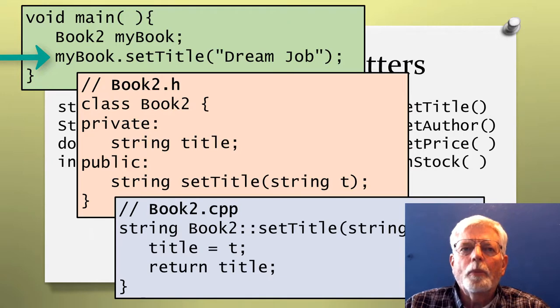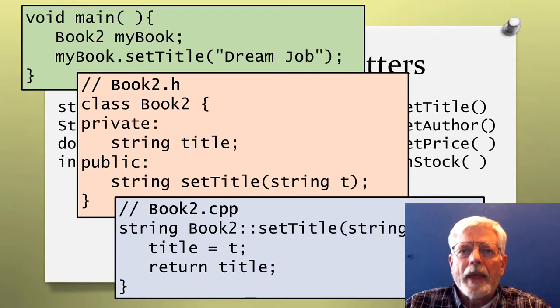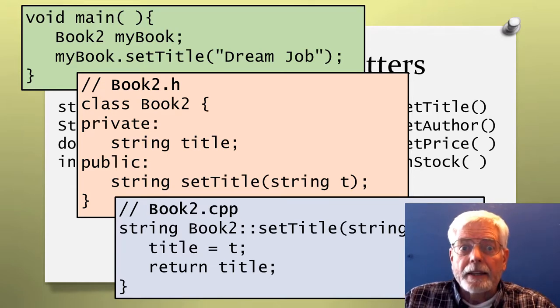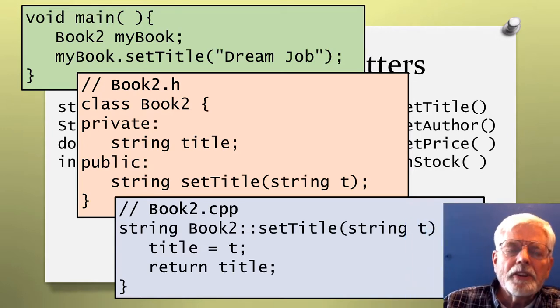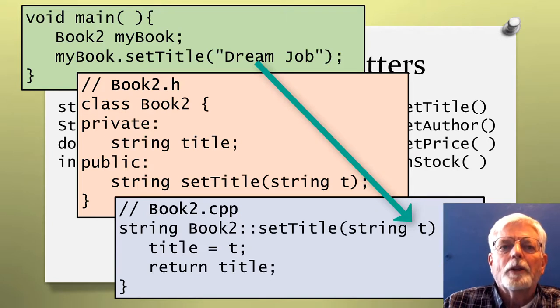In these code segments, main is instantiating a Book2 object named MyBook. Then it uses MyBook.setTitle to place DreamJob into the title member data variable that is part of the object. Book2.h is the interface between the main program and the code in Book2.cpp that actually does the work. Inside the class definition is the private data member title and the public setter method named SetTitle.